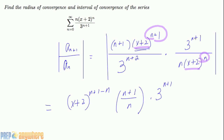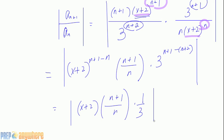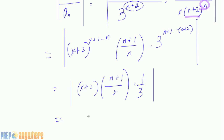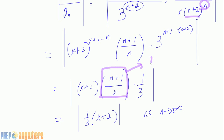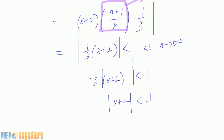So we have (n+1)/n · (1/3)|x+2|, and as n approaches infinity, (n+1)/n approaches 1, since it's a simple rational expression. The limit is (1/3)|x+2|. For convergence, this must be less than 1, so |x+2| < 3. The radius of convergence is r = 3.